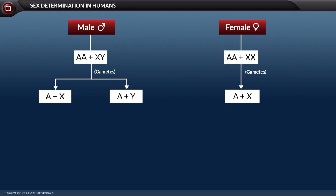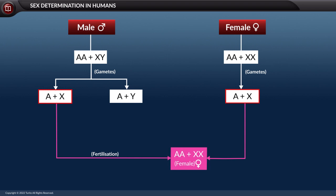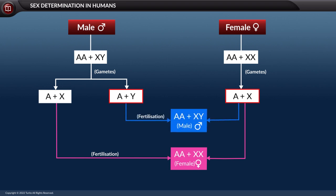During fertilization, when the sperm carrying the X allosome fertilizes the ovum carrying the X allosome, it results in the formation of an embryo having XX allosomes — this embryo will be female. In contrast, when the sperm carrying the Y allosome fertilizes the ovum carrying the X allosome, it results in the formation of an embryo carrying XY allosomes — this embryo will be a male.